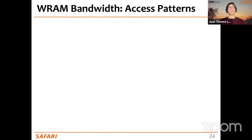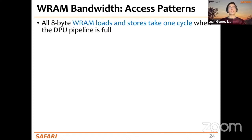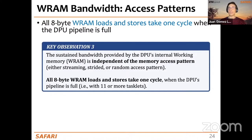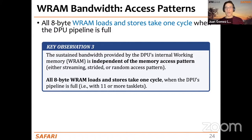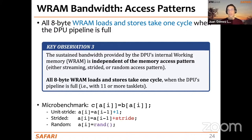An interesting observation is that all WRAM loads and stores take one cycle when the DPU pipeline is full. This means the sustained bandwidth obtainable from WRAM is independent of the memory access pattern — whether accesses are unit-stride, strided, or random, we always get 8 bytes in one cycle. That is why the effective WRAM bandwidth is independent of the access pattern.